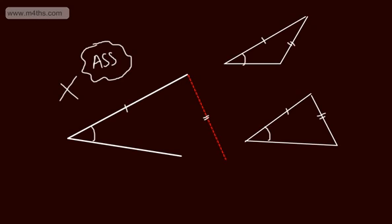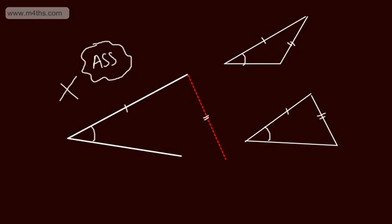So we've got Angle-Angle-Angle which isn't a proof, and then Angle-Side-Side which also isn't. That's a brief intro. What we're now going to do is look at some slightly harder questions using the tests for congruency. In the first one, ABCD is a parallelogram. We need to prove that triangle ABD and triangle BCD are congruent.